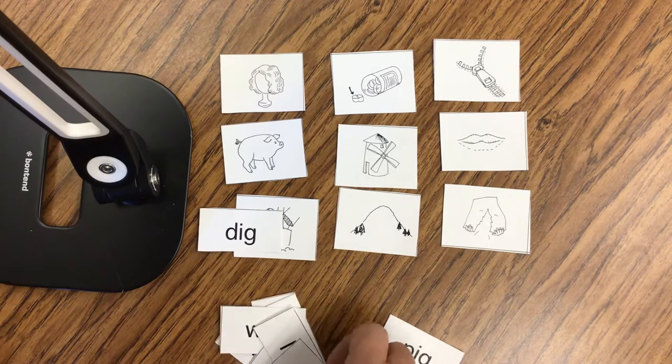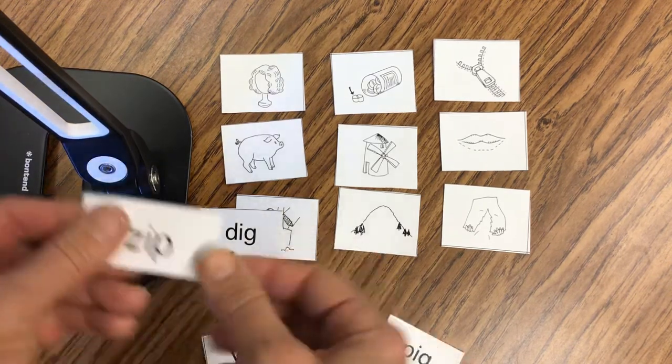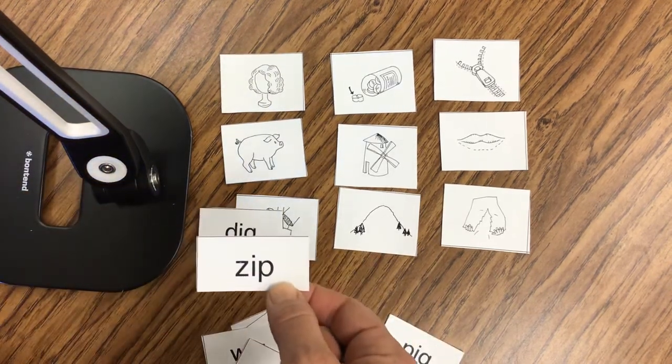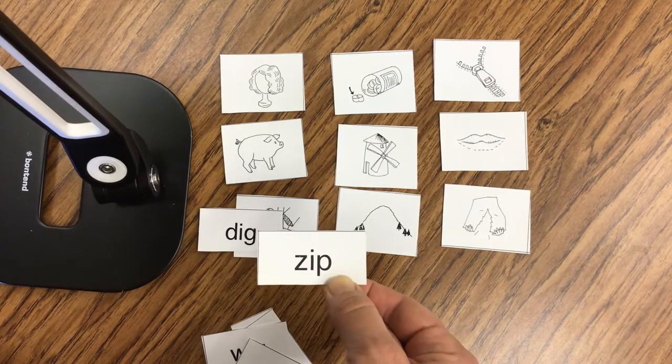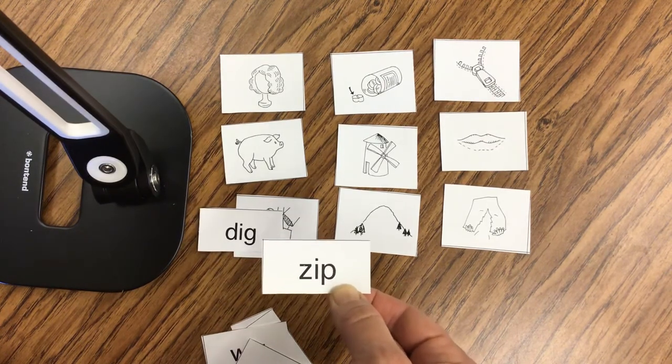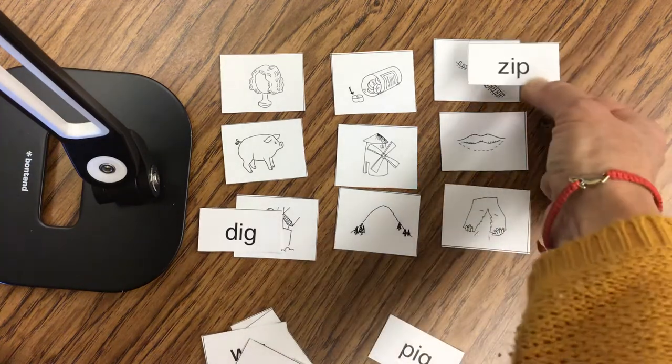Let's try a different one. Let's try this. The letter Z is in the front. And it ends in ip. I-P. I-P. Z-I-P. Zip. That's going to go up there.